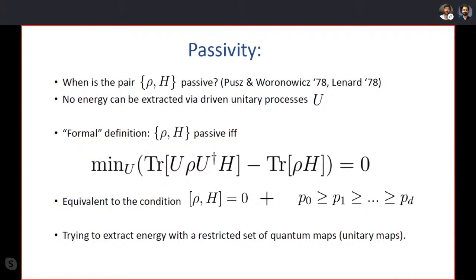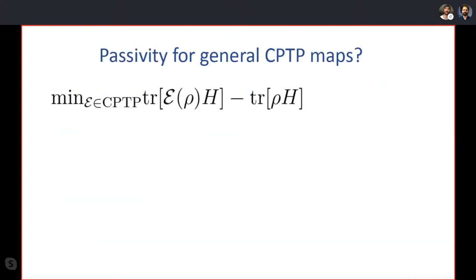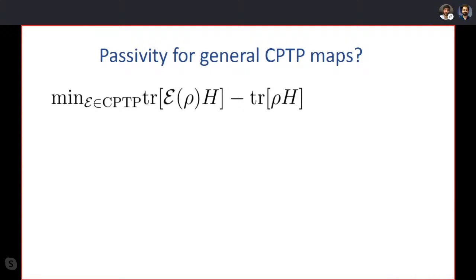There's another kind of passivity: passivity for general CPTP maps, where the optimization is over all possible quantum maps rather than just unitaries. This turns out to be trivial, because the map that minimizes the energy is simply the one that takes any state to the ground state of the Hamiltonian. So this quantity is zero if and only if your initial state is already the ground state — only the ground state is passive in this sense, which is not a very interesting notion.